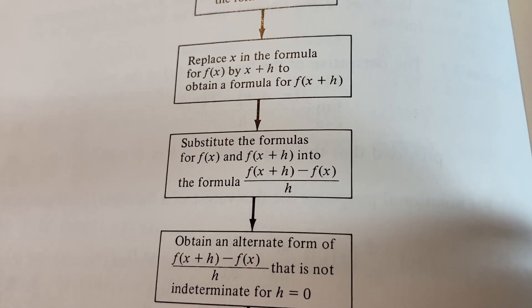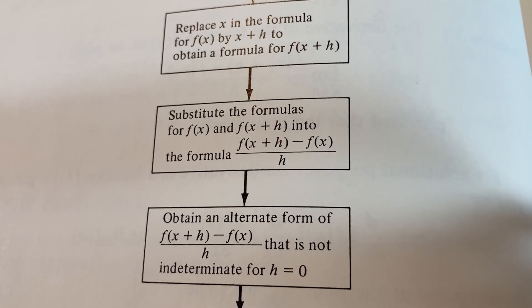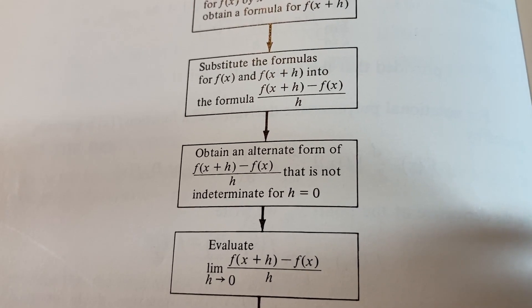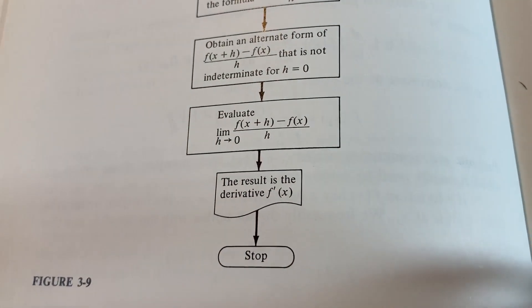Substitute the formulas for f of x and f of x plus h into the formula and that formula is called the difference quotient. And then obtain an alternate form of that formula that is not indeterminate for h equals zero. And then evaluate the limit. The result is the derivative stop.